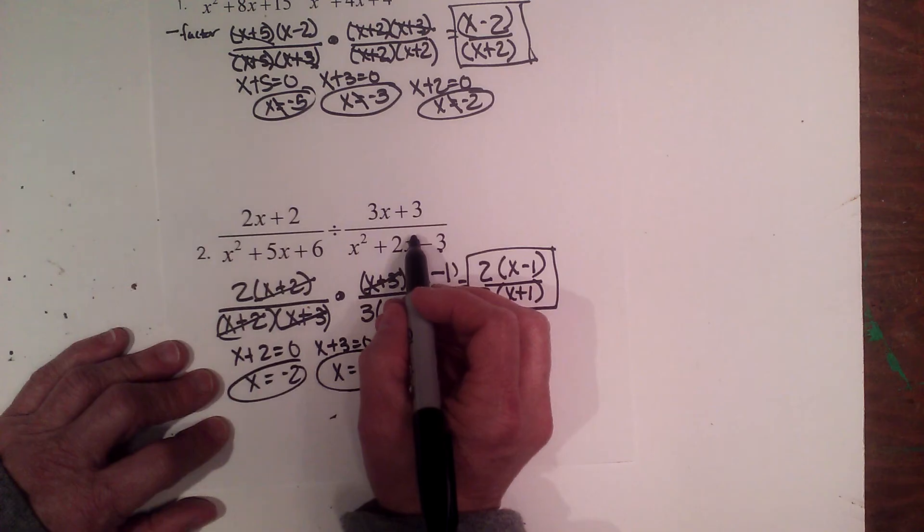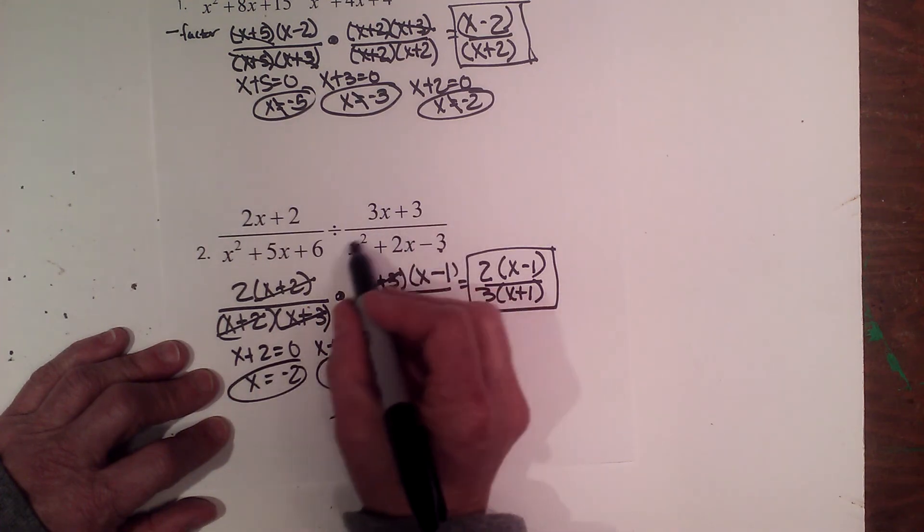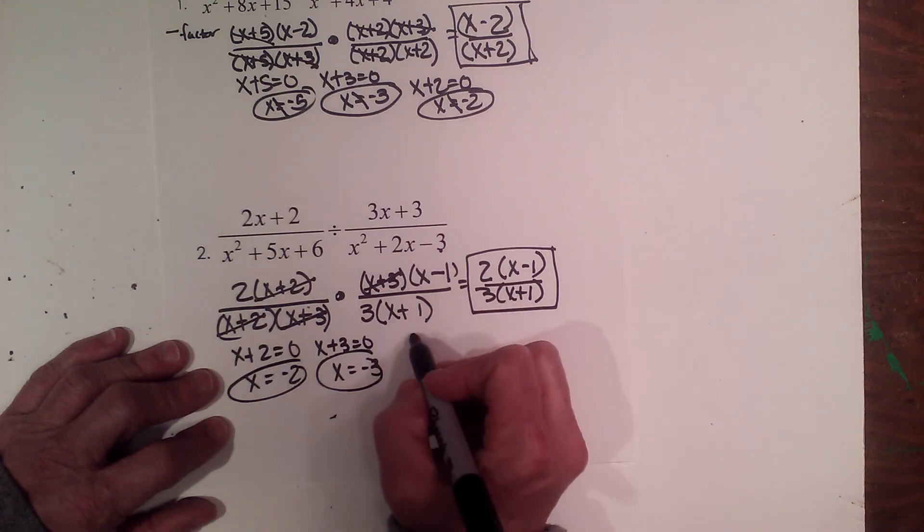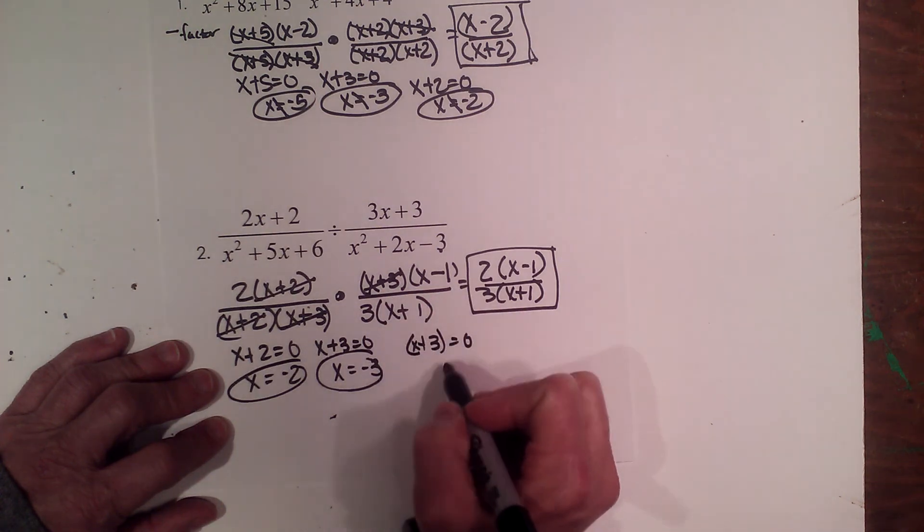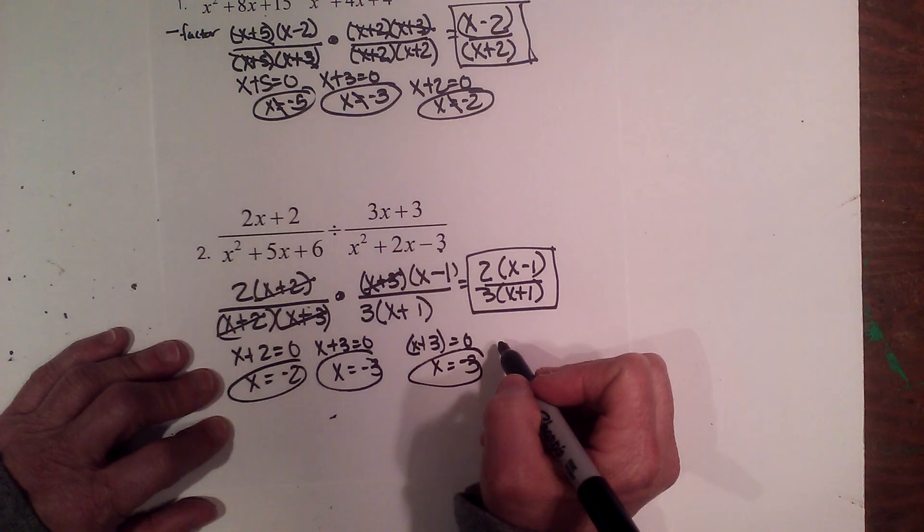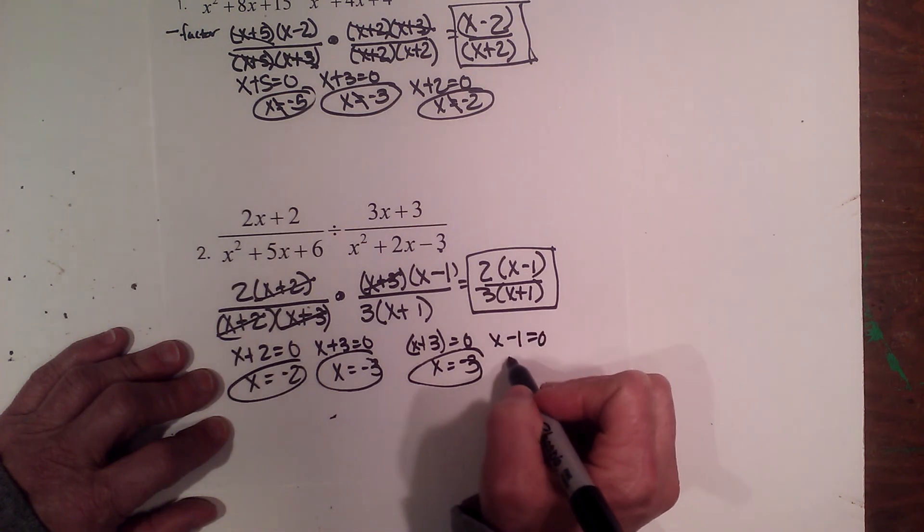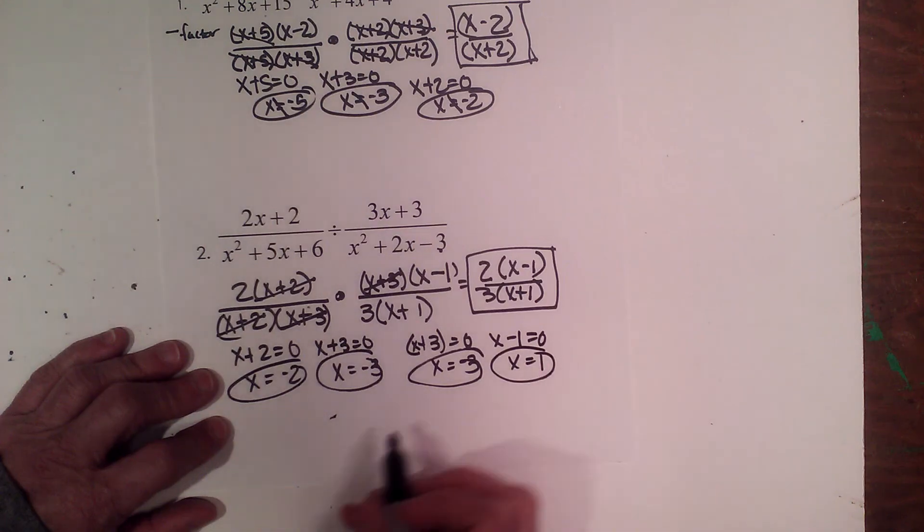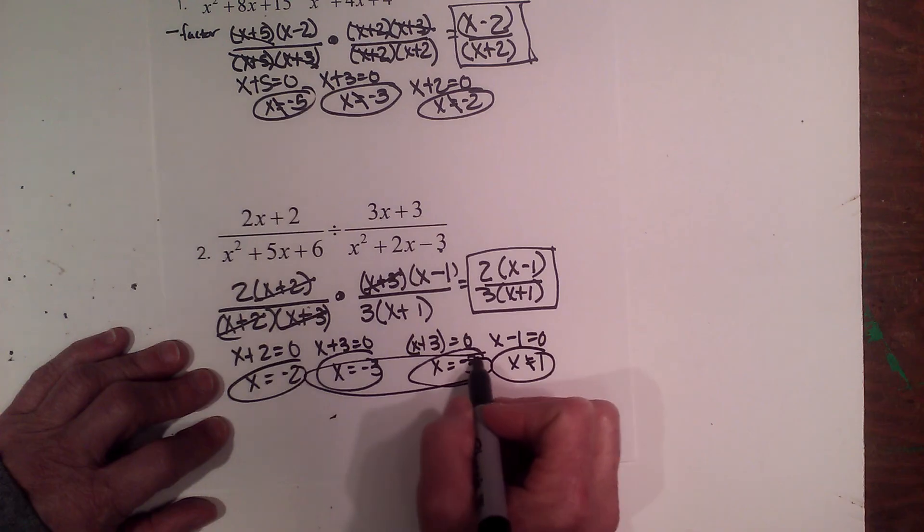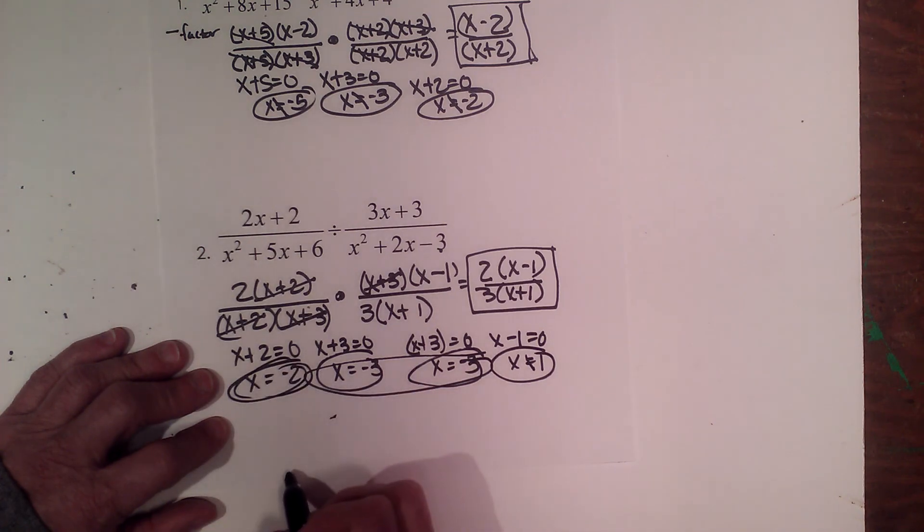Now this one's a little tricky. So we have to look at the denominator of the original problem. That's these two factors. So where is x plus 3 equal to 0? And that's where x is negative 3. Well we've already accounted for that one. And the last one is where is x minus 1 equal to 0? And that's where x is 1. So my excluded values are positive 1, negative 3, and negative 2.